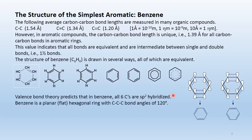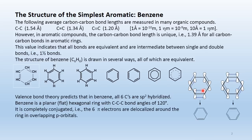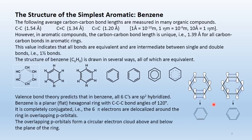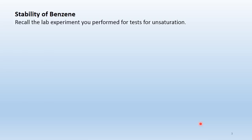Benzene is a flat, planar hexagonal ring with carbon-to-carbon bond angles of 120 degrees. It's completely conjugated. Each carbon has a single unhybridized 2pz orbital with one electron in it, so there are a total of six pi electrons delocalized around the ring by overlapping p orbitals. The overlapping p orbitals form a circular electron cloud above and below the ring.